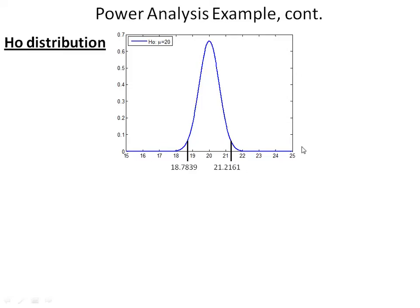This plot shows the null hypothesis distribution with a mean of 20. The cutoff for significance in the null distribution is 21.2161 in one direction and 18.7839 in the other direction. The area under the curve to the right of this cutoff value is alpha over 2, which is 0.025, and the other tail is also alpha over 2, so they add up to 0.05.